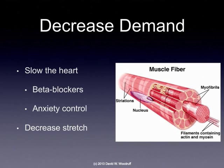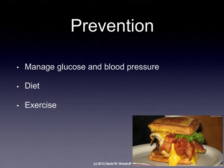Beta blockers are working on both ends of the equation, which will have a beneficial effect for our patient. Anxiety control is important because we don't want the sympathetic nervous system to be activated by the patient's anxiety. We also want to decrease the amount of stretch on the myocardial fiber — the more we stretch it, the harder it contracts, and the harder it contracts, the more oxygen it uses.